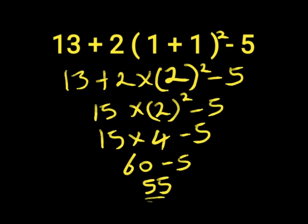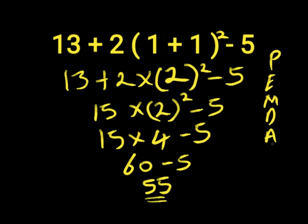So, 55 is the wrong answer to this expression because we do not follow the order of operations, which is PEMDAS. In PEMDAS, we have parentheses, exponents, multiplication, division, addition, and subtraction. Multiplication and division have equal priorities, as do addition and subtraction, working from left to right in order to arrive at the correct answer.